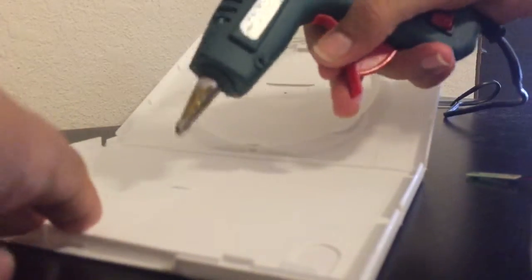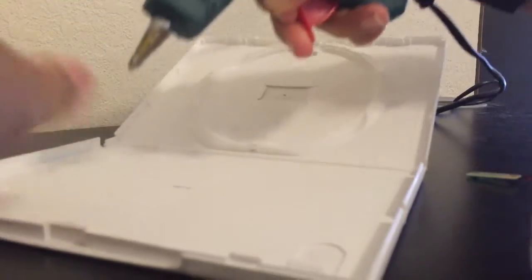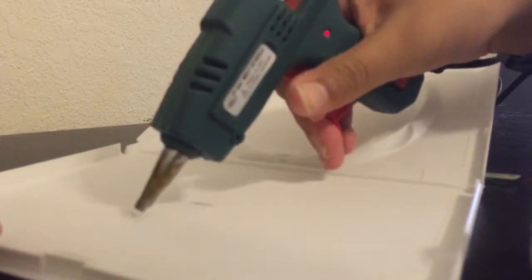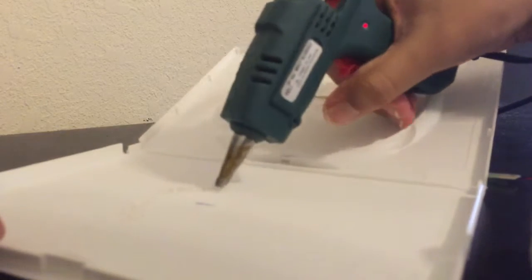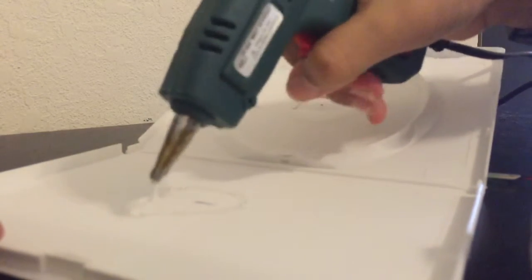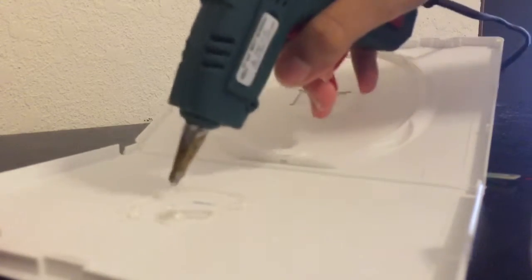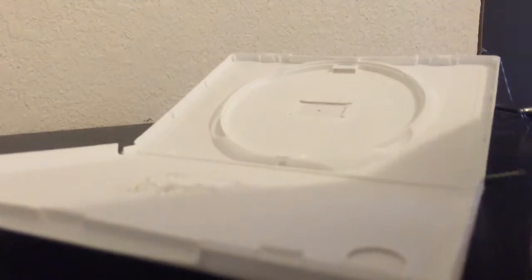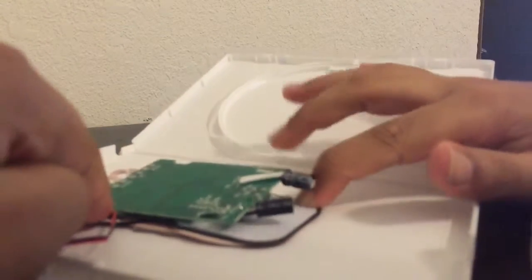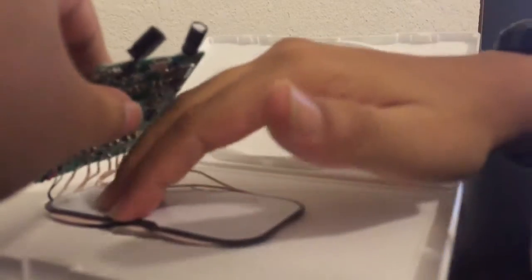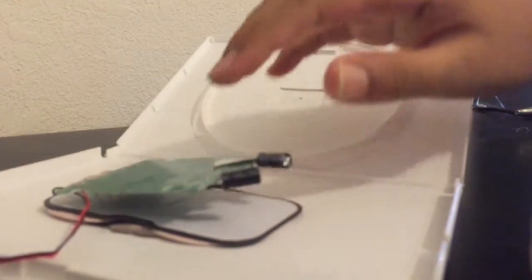The first thing we need to do is get our hot glue gun and draw a little circle right here in the middle. Once you got that, quickly get your PCBA and just plop it right on top just like that. Just wait for the glue to set in, press it down nice and good.